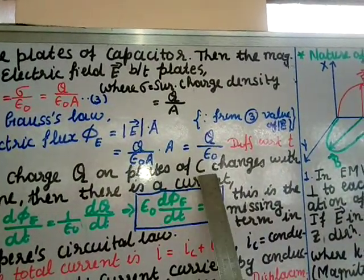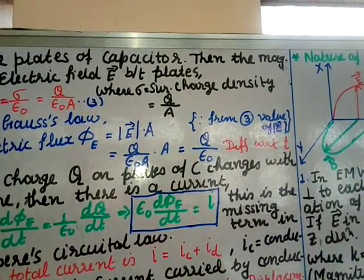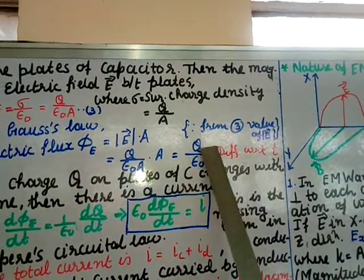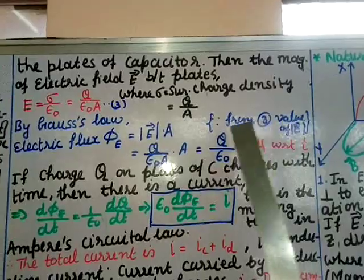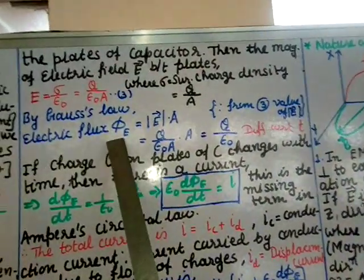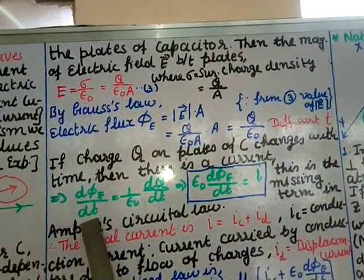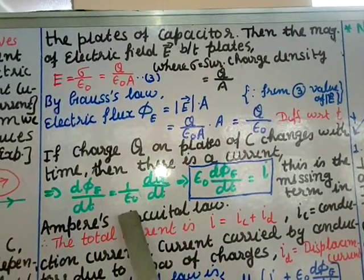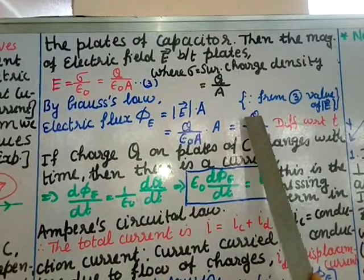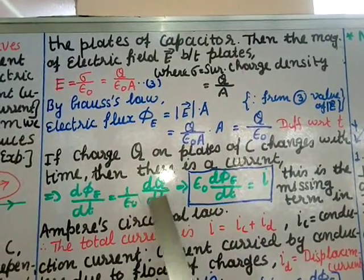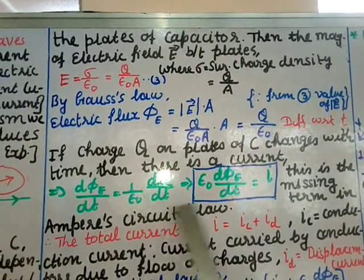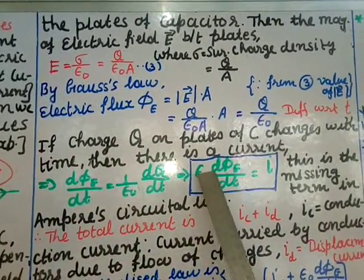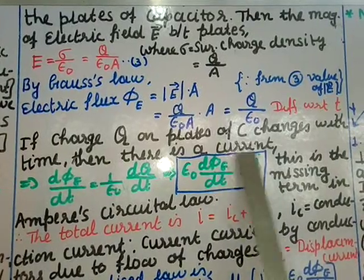If charge Q on the capacitor plates changes with time, there is a current. So we differentiate φₑ = Q/ε₀ with respect to time. Differentiating both sides: dφₑ/dt = (1/ε₀)(dQ/dt). Since dQ/dt is the current i, we get ε₀ dφₑ/dt = i. This is the term missing in Ampere's circular law.